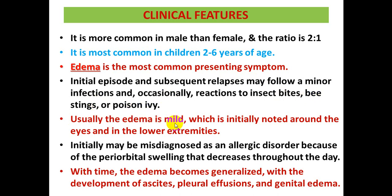Usually the edema is mild at the beginning, initially noted around the eyes and then in the lower extremities. Initially the edema is sometimes misdiagnosed as an allergic disorder because of the periorbital swelling that decreases throughout the day. But with time, the edema becomes more severe and generalized, with development of ascites, pleural effusion, and genital edema.